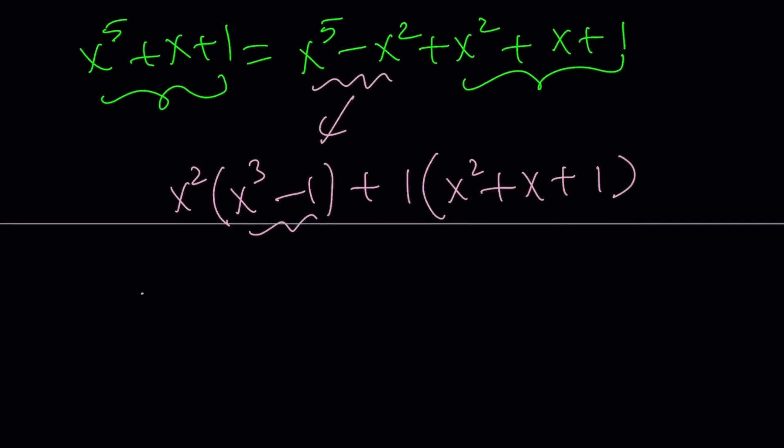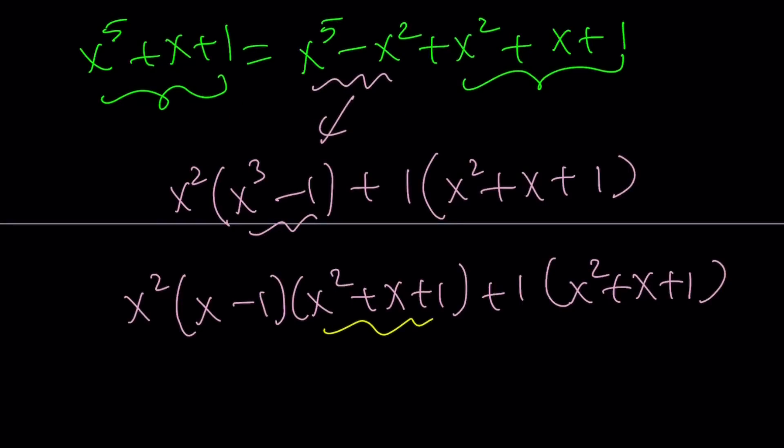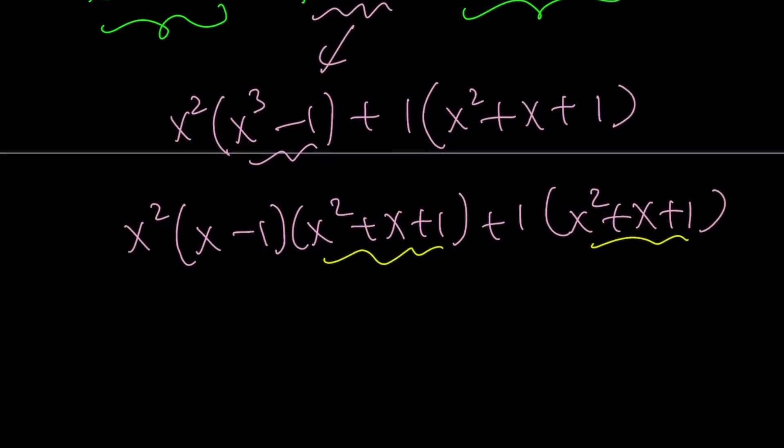Now, this is the difference of two cubes. This is where the fun starts. You can write it as x minus one, x squared plus x plus one, and yay, we got a common factor. We can go ahead and factor out the x squared plus x plus one here. So, this is a common factor. We can basically pull it out, and the rest will follow, and we're going to get x squared times x minus one.